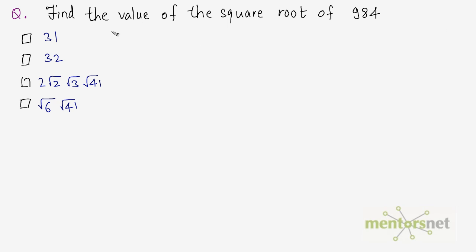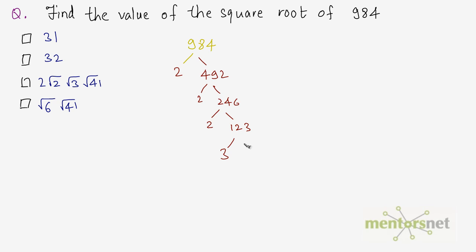So I have a question for you now. You have to find out the square root of 984. Let us first calculate the prime factors of 984. 984 is divisible by 2, so 2 times 492 is 984. 492 is again divisible by 2, so 2 times 246 is 492. Again, 2 times 123 is 246. The digit sum 3 plus 2 plus 1 equals 6, which is divisible by 3. So 3 times 41 is 123, and 41 is a prime number, so we cannot go further. Therefore 984 can be written as: 2 times 2 times 2 times 3 times 41.